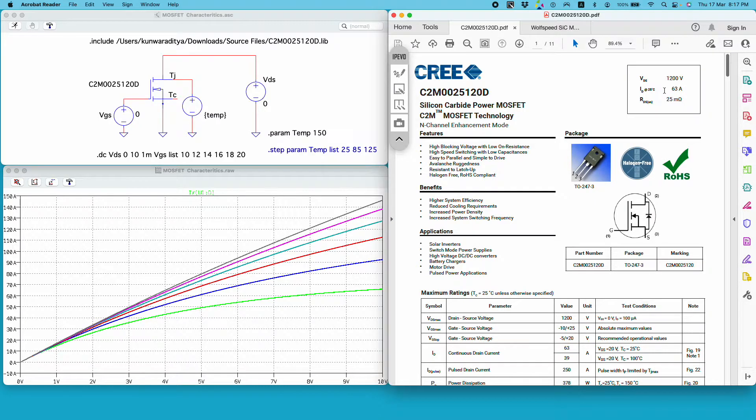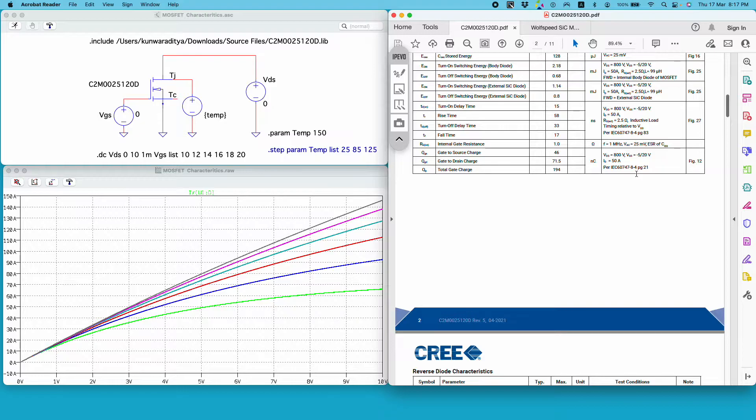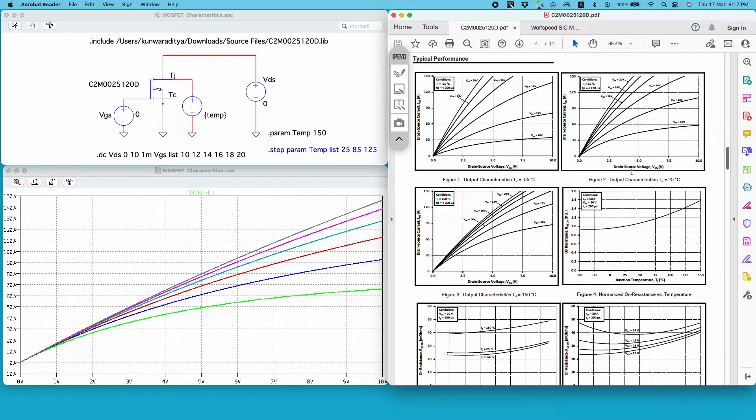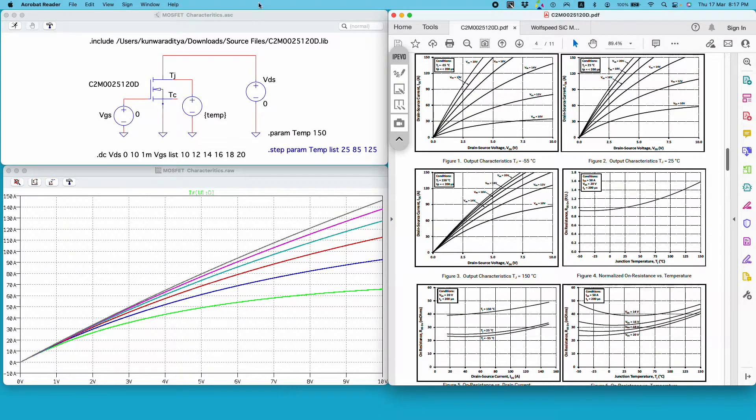It is rated for 1200 volts and the current rating is 63 amps at 25 degrees Celsius. Essentially I'm trying to capture this particular characteristic shown in the datasheet, this ID versus VDS plot for different values of gate-source voltage.